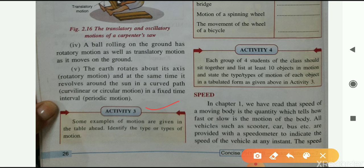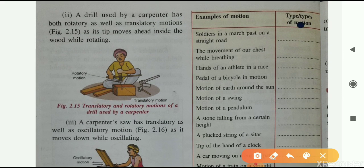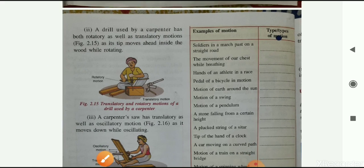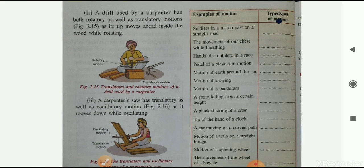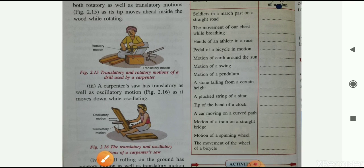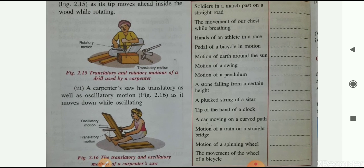Now activity 3 — some examples of motion are given in a table. You have to identify the types of motion for each example — this is your homework. Read all these types of motion yourself as well for better understanding. Further explanation of the lesson will continue in the next video. Thank you.